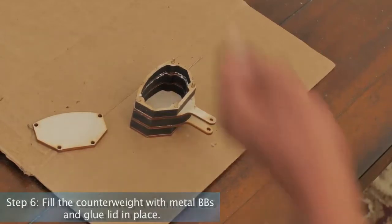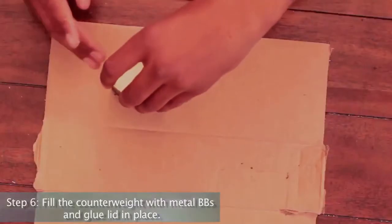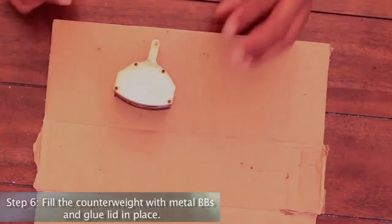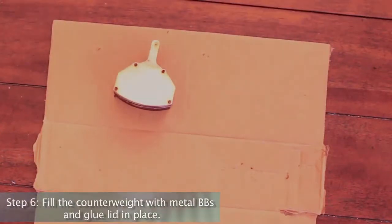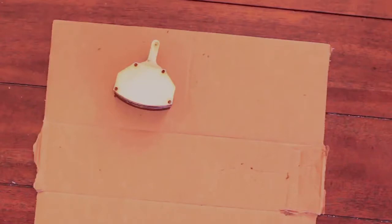Step 6: Fill the counterweight with metal BBs, steel shot, or small fishing weight (not included), and glue the lid into place. The counterweight should weigh at least 7 ounces.